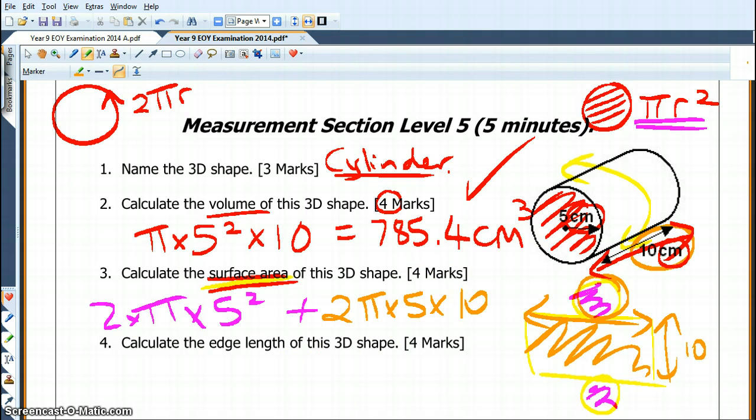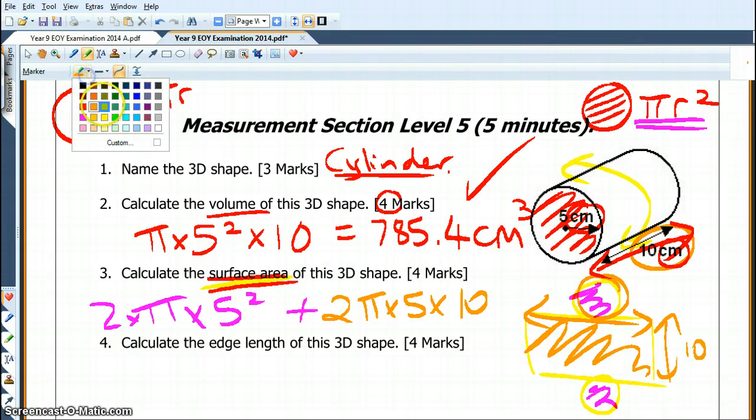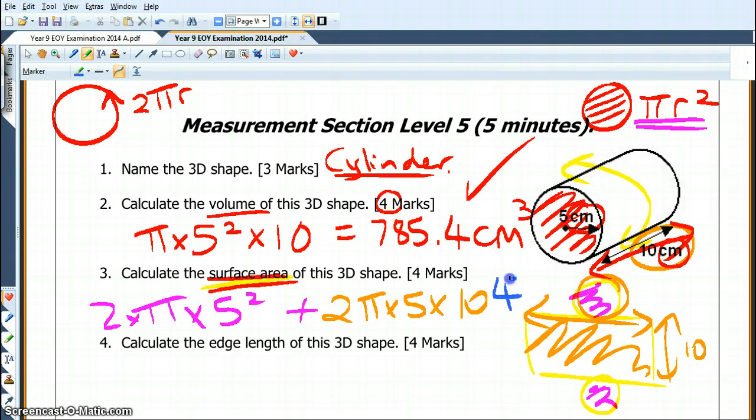So we get our trusty calculator out, and we go clear. 2 times shift pi times 5 squared, so that's my two circles either end, plus 2 times shift pi times 5, 2 pi r was my diameter, times, sorry not my diameter, my circumference, the edge of the circle, times 10, so that was my rectangle. I've got 471.2, so 471.2, that's going to be centimetres squared.